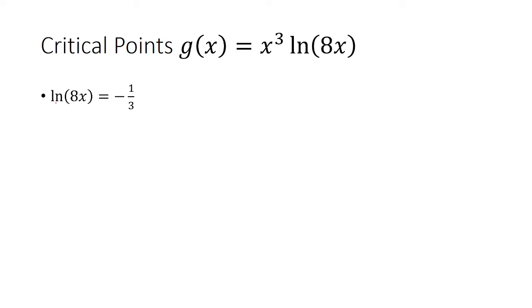Now to undo the natural log we have to do e to both sides like this, so e to the natural log cancel. We're left with 8x = e^(-1/3), and so dividing both sides by 8 we get x = (1/8)e^(-1/3).